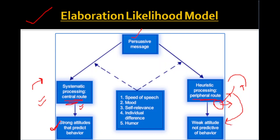Peripheral processing results in a weak attitude because it's based on non-message cues. Factors in peripheral route include: speech speed, your mood at the time, self-relevance, individual differences, and whether there was humor in the message. So all these things fall under peripheral mode. If your mood was good, you might agree; if your mood was already bad, you might not accept anything. And because the attitude formed is weak, your behavior also cannot be predicted from it.